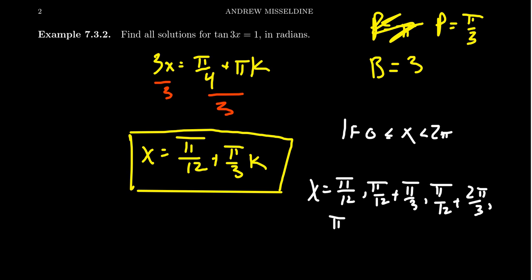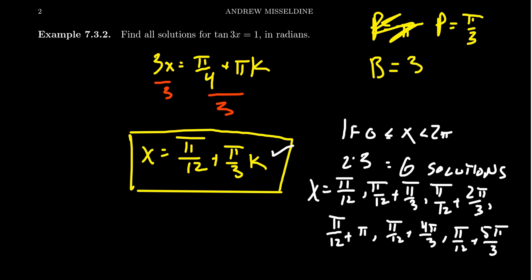We also would need pi twelfths plus pi, 3pi thirds. We need pi twelfths plus 4pi thirds. We'd also need pi twelfths plus 5pi thirds. And you could add those fractions together to simplify them. But the point is, as you go from zero to 2pi, there would be six solutions in all. As opposed to the standard tangent, which would have two solutions from zero to 2pi. Where did six come from? Well, we take the two solutions from the standard tangent and then we times that by three. Because we cut the period by a third, thus raising the frequency by a factor of three.